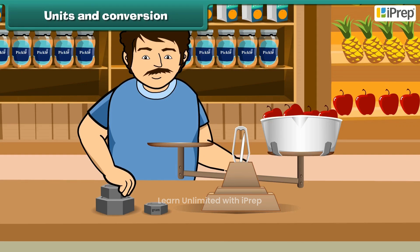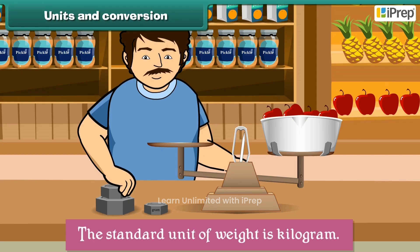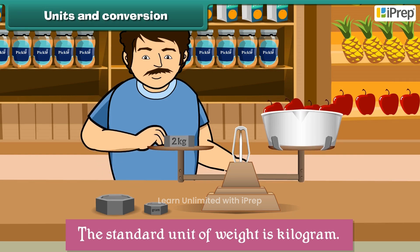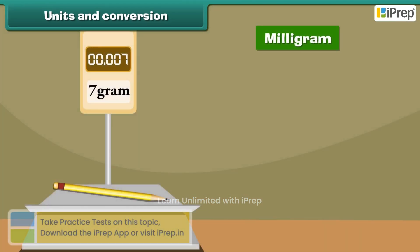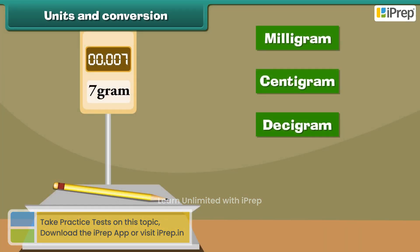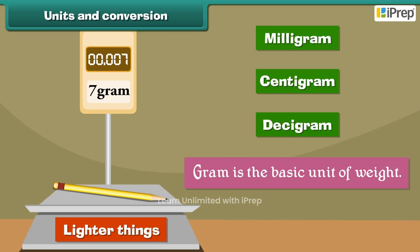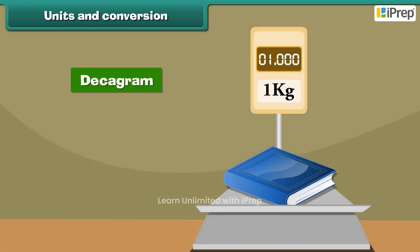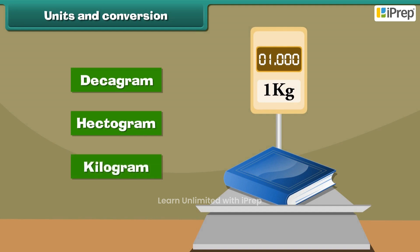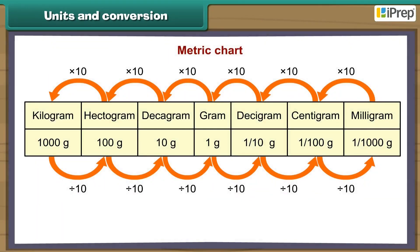Units and conversion: The standard unit of weight is the kilogram. We commonly use grams and kilograms. Milligram, centigram, and decigram are smaller units used to measure lighter things. Gram is the basic unit of weight, whereas units like decagram, hectogram, and kilogram are used to measure heavier things. All these units are related to each other through the metric chart. When we move from one metric unit to another to the right in the metric chart, the value becomes ten times smaller, that is one tenth.